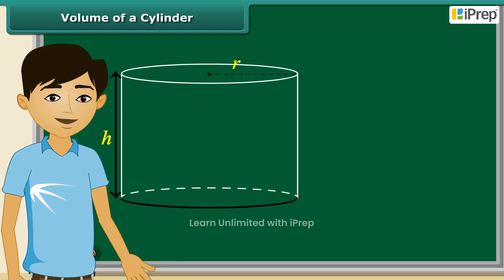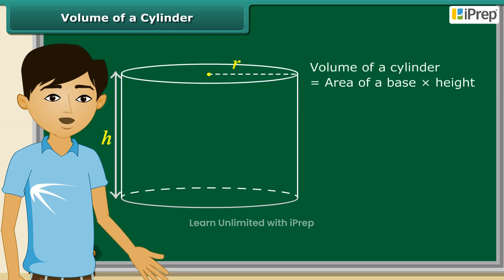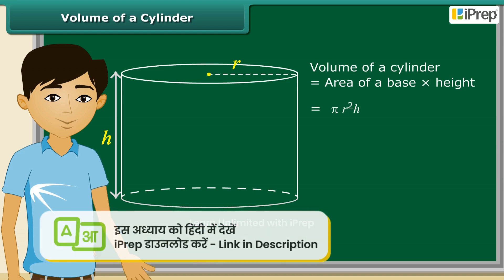Well, for calculating volume, we will multiply area of a base with the height. So, volume of a cylinder is equal to pi R square H.